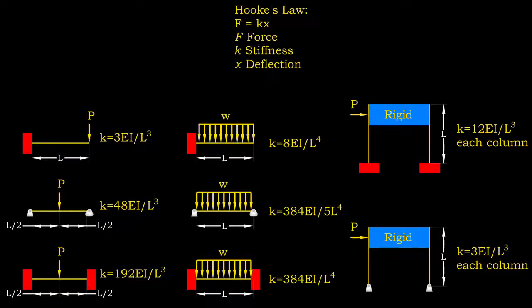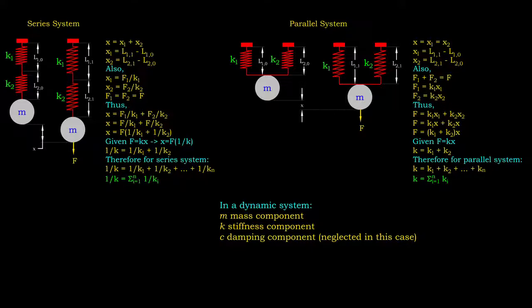Given the stiffness of an element, we can calculate the force required to deform it by a certain magnitude based on Hooke's law. This law is applicable for us as we always allow the structure to work under the elastic region. In a dynamic system, stiffness component is contributed by structural elements that deform when resisting external force.